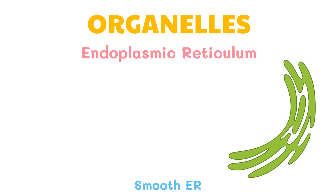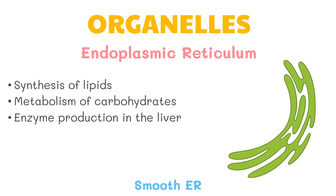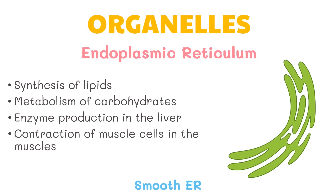The smooth ER is involved in the synthesis of lipids like phospholipids, which are used to build the cell membrane. Other functions of the smooth ER include metabolism of carbohydrates, enzyme production in the liver, and contraction of muscle cells in the muscles.